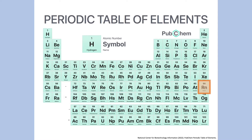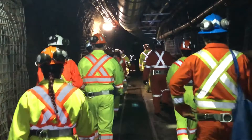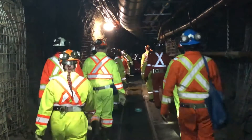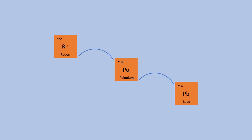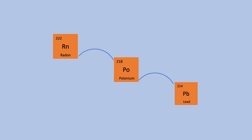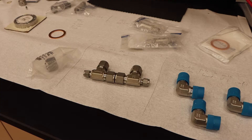Radon is the atom of interest in this example, which exists commonly in nature and is prevalent underground. Radon's decay produces numerous alpha particles, which cause trouble in our detectors. We need to identify a radon emanation rate for all materials we want to use in our detectors to determine if they're suitable.